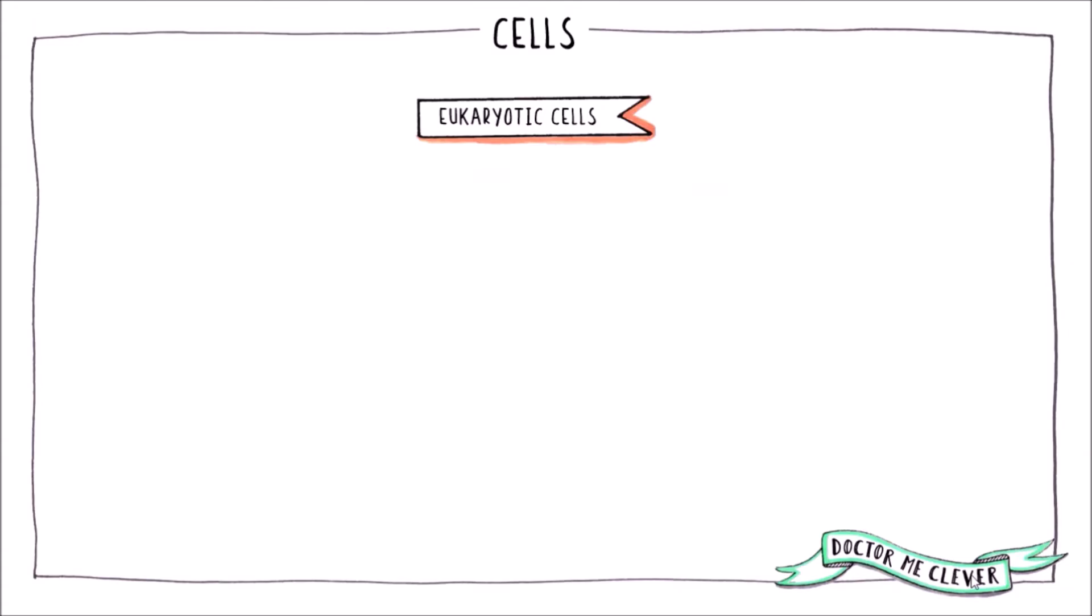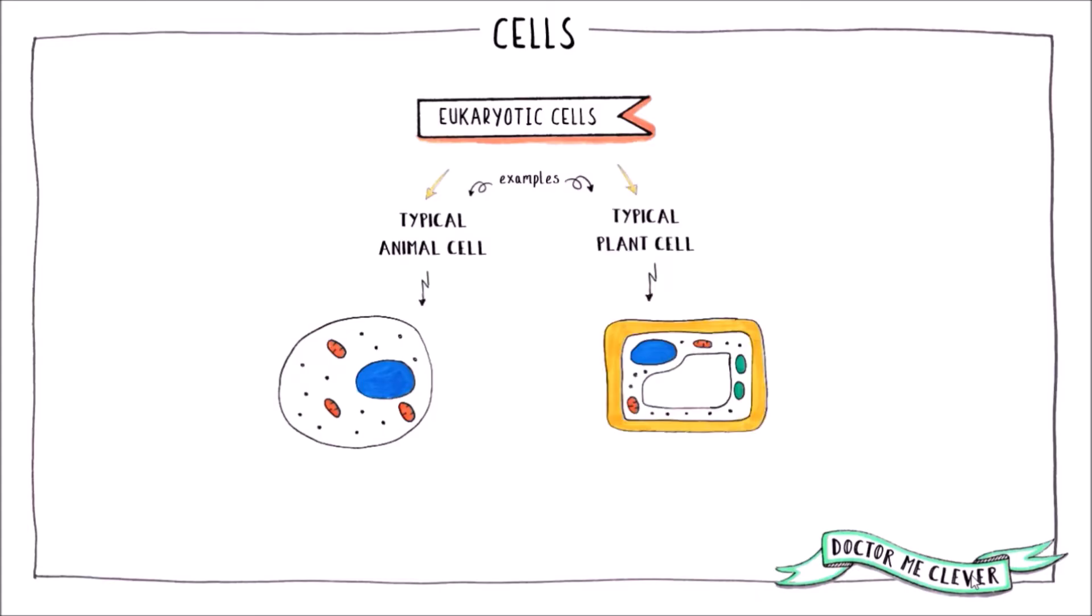You need to know some examples of eukaryotic cells for your exam. The first is an animal cell, and the second is a plant cell. You need to be able to draw and label the basic subcellular structures in these cell types. You also need to know which structures are unique to plant cells, and not found in animal cells.